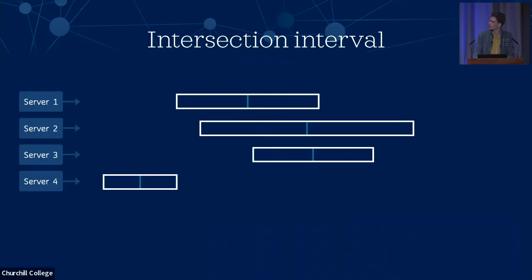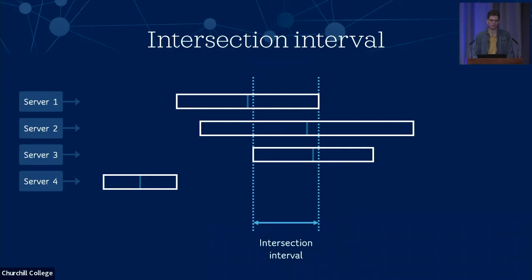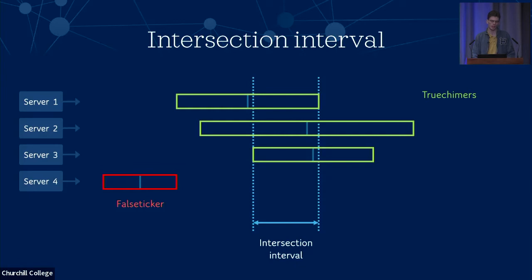Looking at a diagram: we have four different servers that we're polling, each with a measured offset value and a root distance giving a correctness interval. The intersection interval is the point where three of our servers are overlapping — that's the maximum amount overlapping at any one time. All sources in this intersection interval are the true chimers and the one outside it is a false ticker. Note that inside the top sample the actual measured value is outside the intersection interval, but we still count it as a true chimer because the correctness interval as a whole overlaps the intersection interval, so the true value could be inside it.